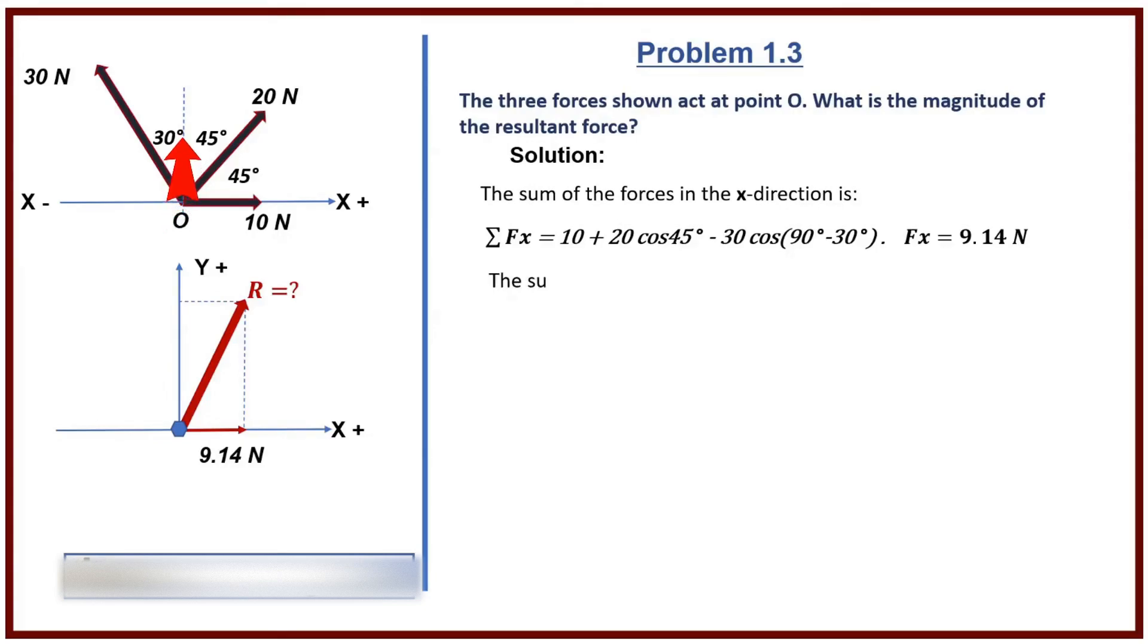The sum of the forces in the y direction is: sum Fy equals 0 plus 20 times cosine 45 degrees plus 30 times cosine 30 degrees. Fy equals 40.12 newtons.